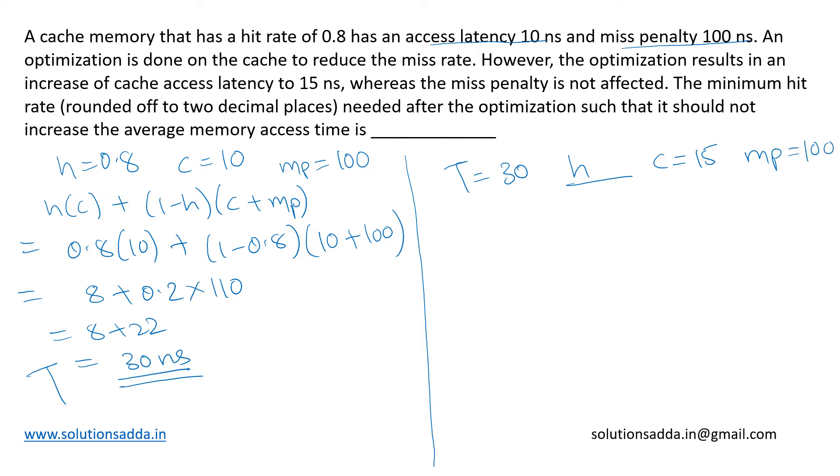In this case, the average access time will be hit rate into cache access time, the same formula which we have used earlier, plus the miss rate into cache access time plus the miss penalty, which becomes h times 15 nanoseconds plus the miss rate, which is 1 minus h, times cache access time plus miss penalty, which is 15 plus 100.